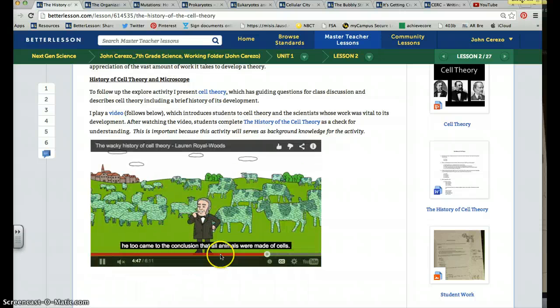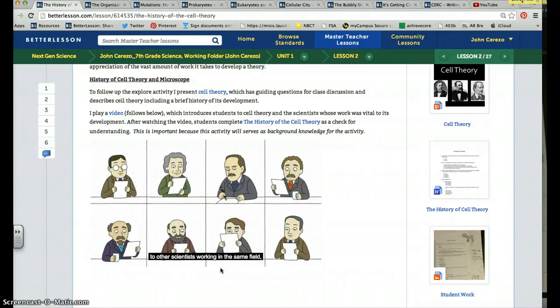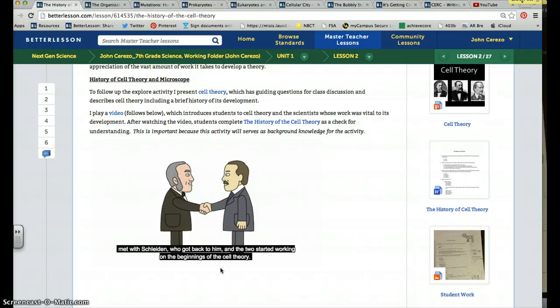It talks about what you're seeing: Matthias Schleiden and Theodor Schwann and their contribution to the cell theory. One discovered that all animals are made of cells and the second discovered that all plants were made of cells. Those two works are things that students need to know in terms of cell theory.